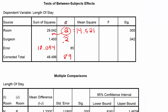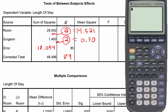Likewise, we divide 2 into our 1.4, which gives us 0.7 for the surgeon mean square. Next we divide the error sum of squares by its degrees of freedom, which gives us 0.2124 for the mean square error.